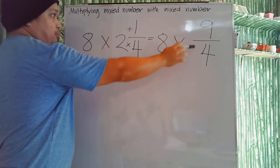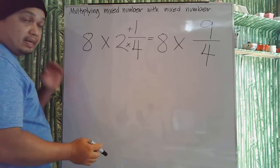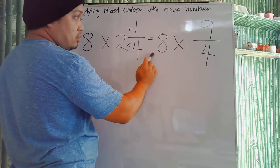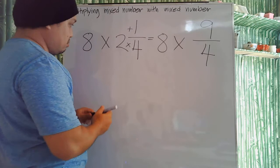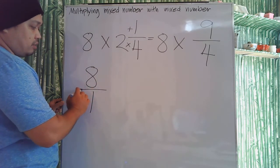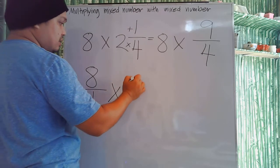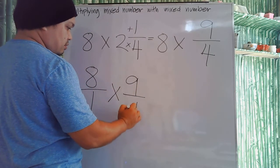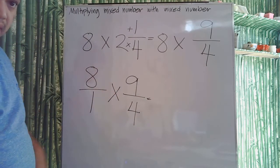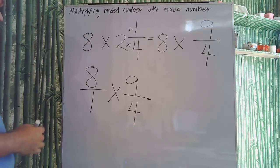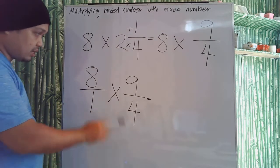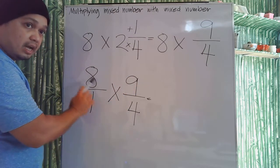So 2 and 1 fourth became the improper fraction 9 over 4. Now we multiply 8 times 9 over 4. We change the whole number 8 into a fraction by putting 1 as the denominator — 8 over 1 — because 8 divided by 1 is still 8. We can use the long method — numerator times numerator and denominator times denominator — but to shorten the process, we can use the cancellation method.